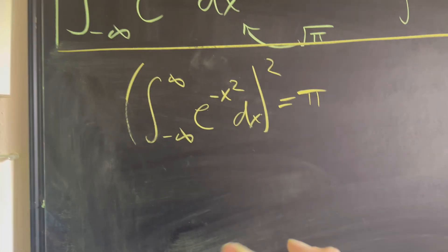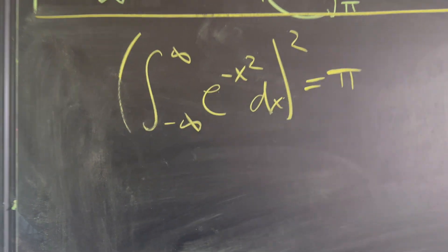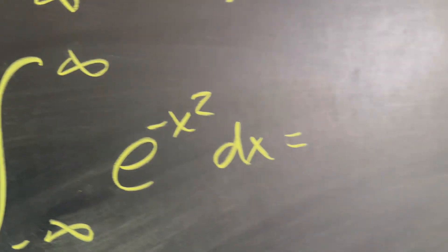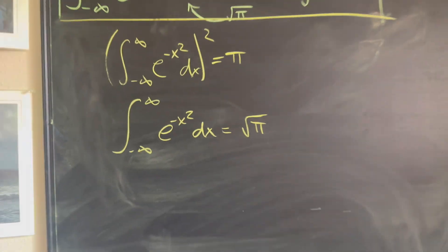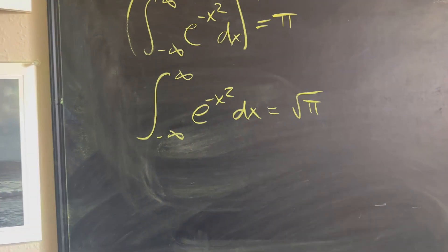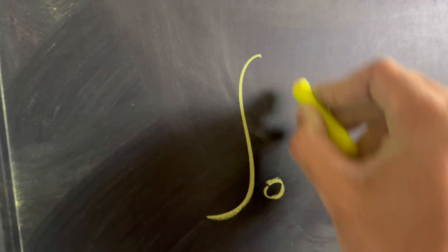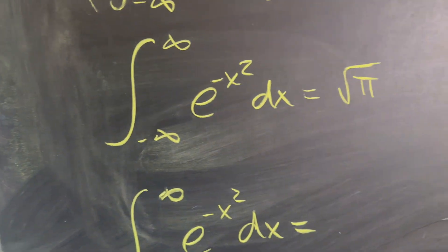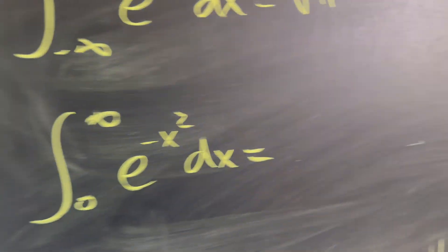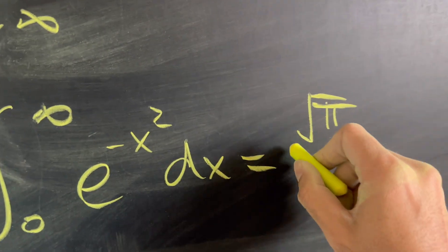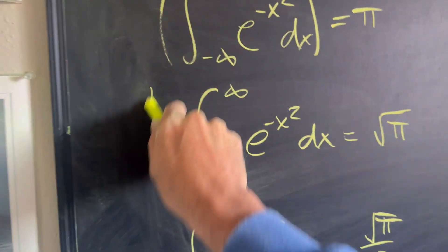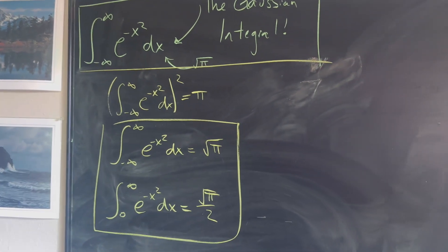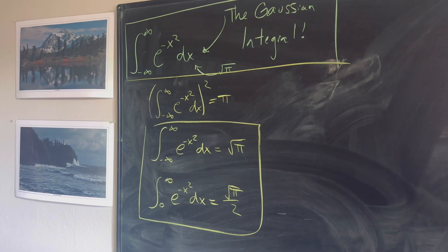So we found that the integral squared equals pi. Taking the square root, the integral from negative infinity to infinity of e to the negative x squared dx equals the square root of pi — that is the Gaussian integral. As an additional property, since this is an even function, the integral from 0 to infinity of e to the negative x squared dx equals root pi over 2. These are two important properties that show up many times in more difficult integration problems.